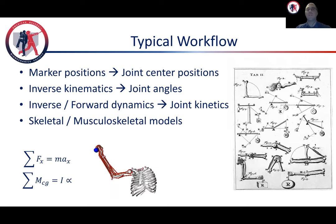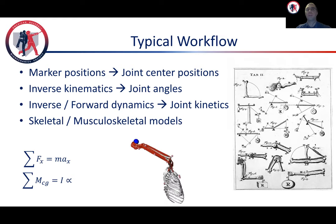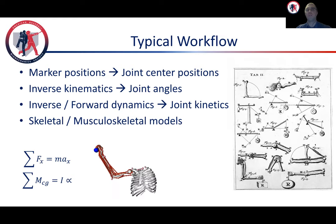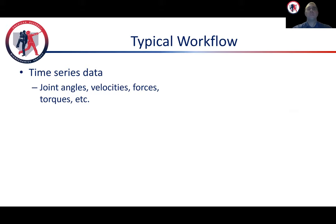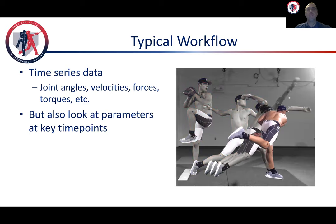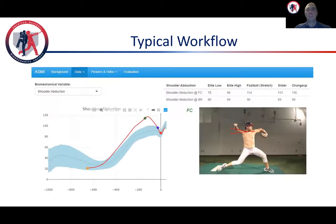Inverse dynamics is typically used to determine joint kinetics as well. If you were so inclined, you could even develop detailed skeletal or musculoskeletal models that can be used to look at things such as power flow, induced accelerations, and even individual muscle forces. In addition to time series data, we typically also highlight key time points. Slow motion video and snapshots can help the athletes visualize the numbers, and mechanics can then be compared to other athletes, as well as to himself, if he had a previous evaluation or through multiple pitch types.